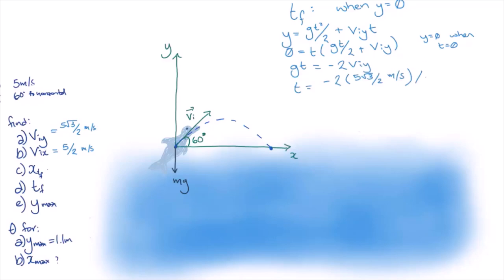Don't forget that gravity is acting downwards, so g is negative 9.8 meters per second squared.